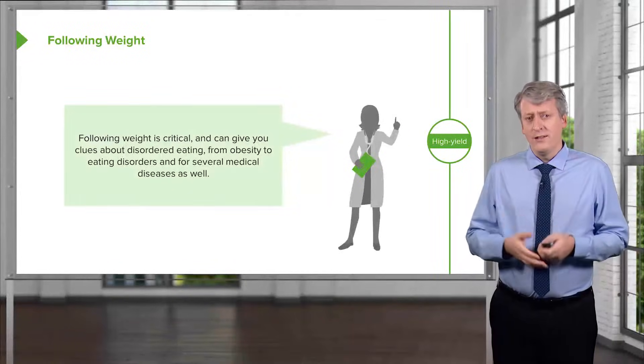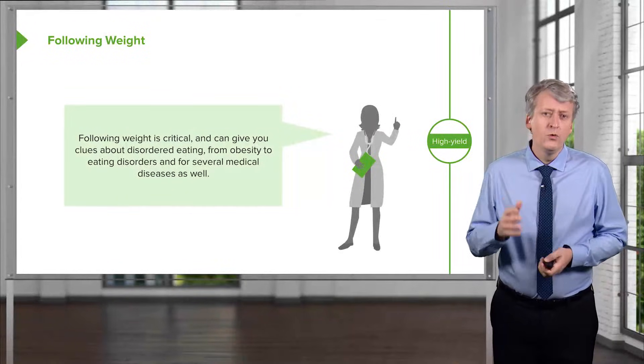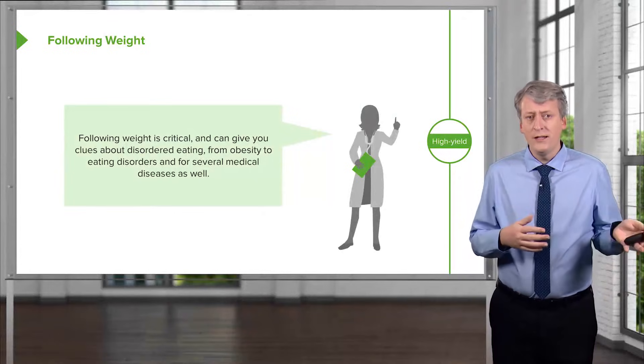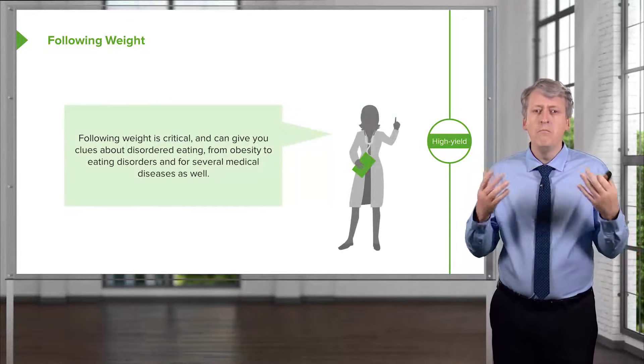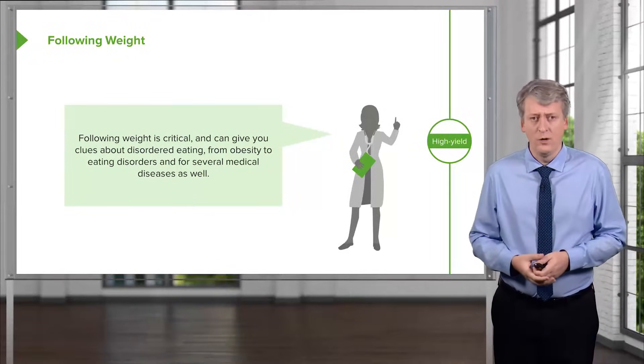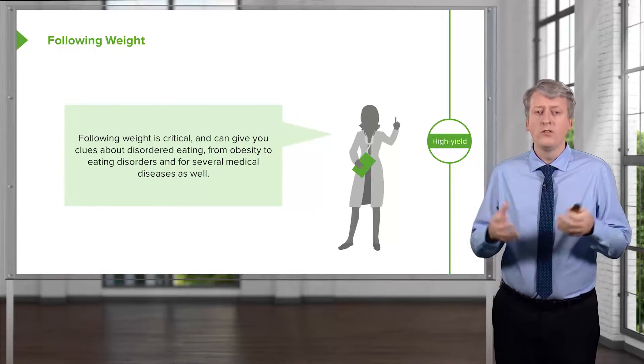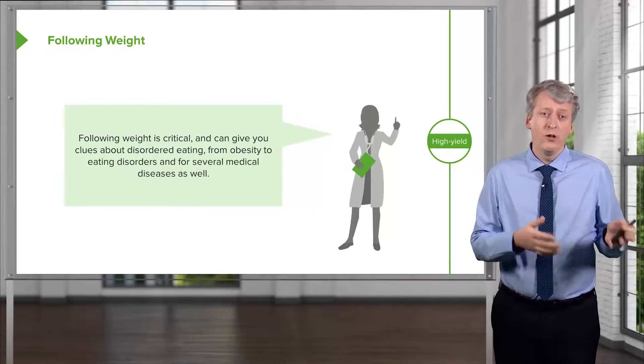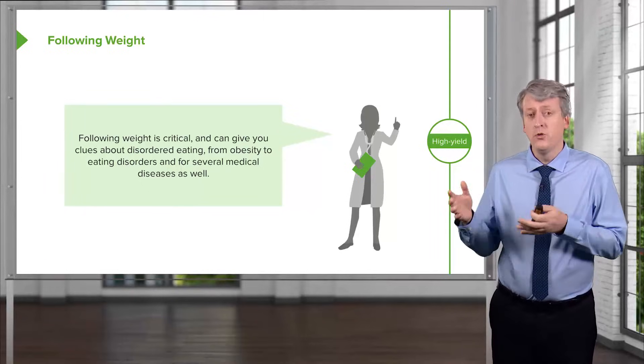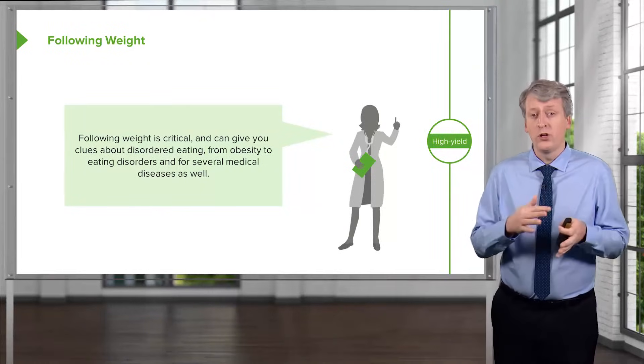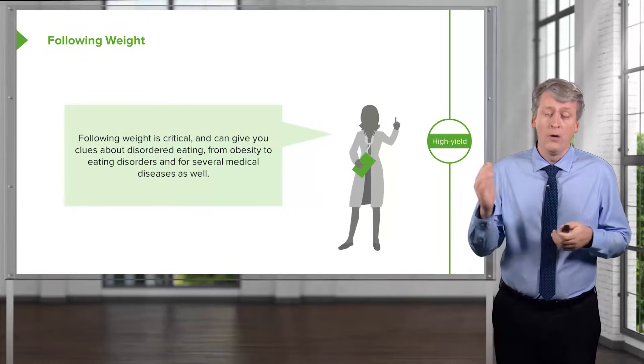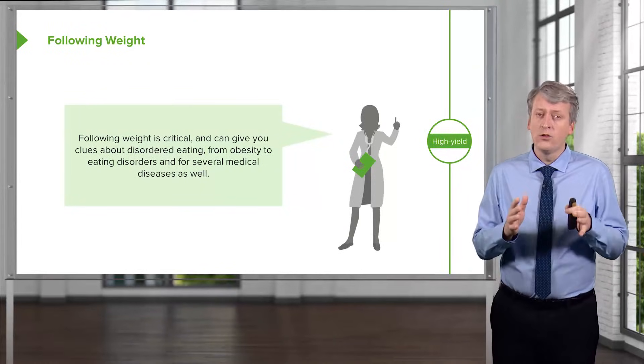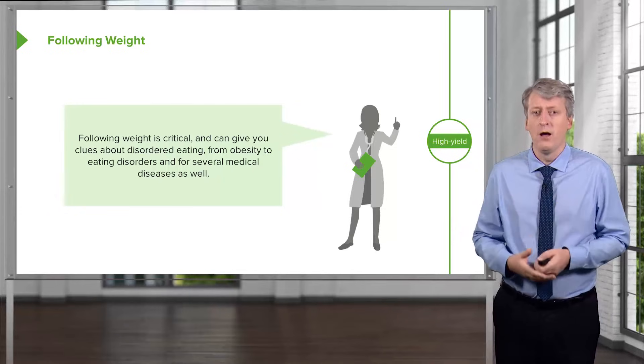Following weight is critical and can give you clues about disordered eating, from obesity to eating disorders and many different medical diseases. There are thousands of reasons why children might fail to gain weight or gain weight too much. The age at which children start to either fall off or go up on their growth curves is critical to understanding exactly what the problem is.